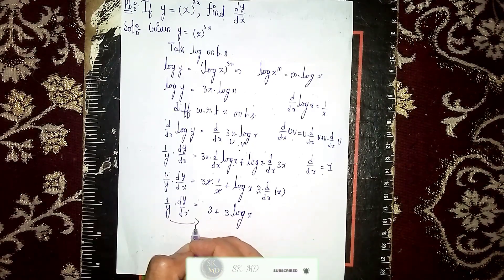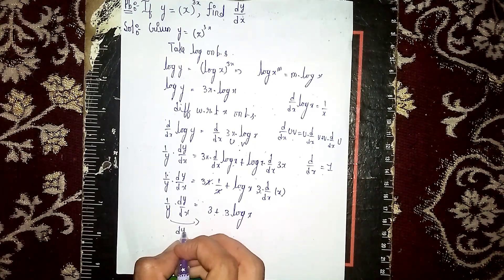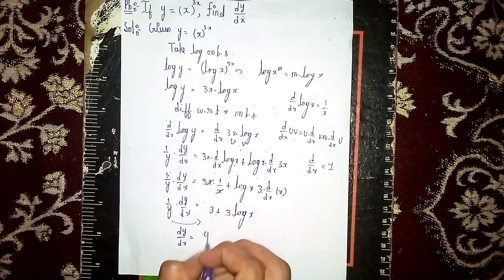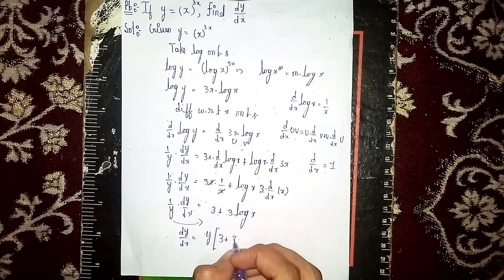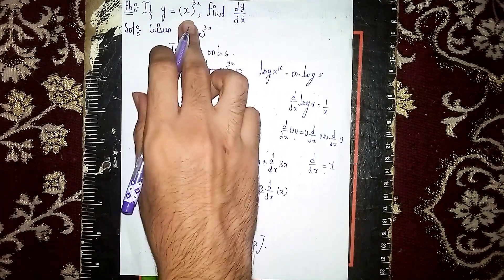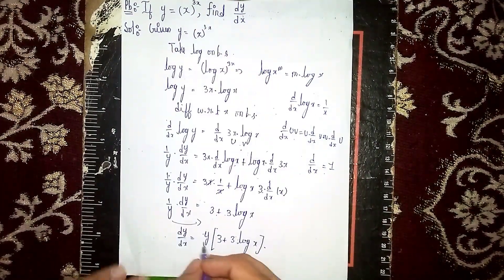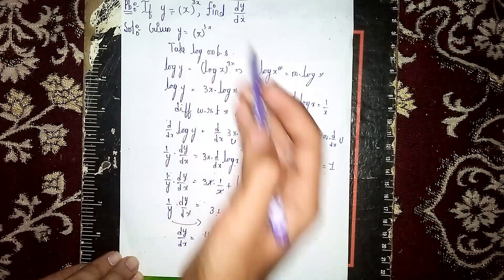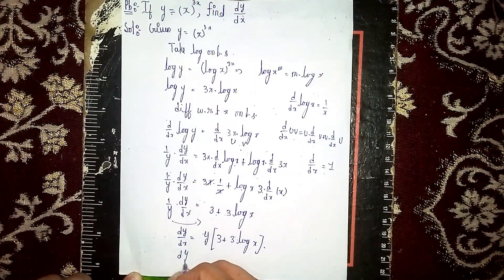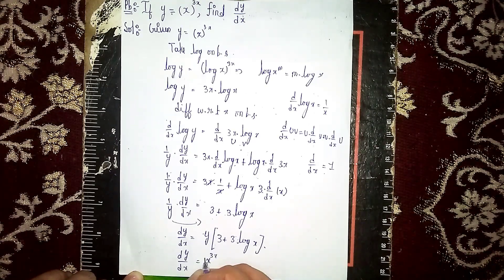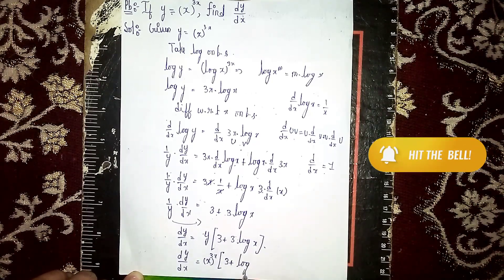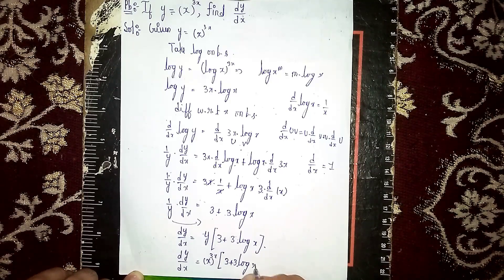To find dy/dx, send the 1/y to the right side, so y multiplies over. Thus dy/dx equals y into (3 plus 3 log x). Now substituting y equals x power 3x, our final answer is dy/dx equals x^(3x) into (3 plus 3 log x). Thanks for watching.